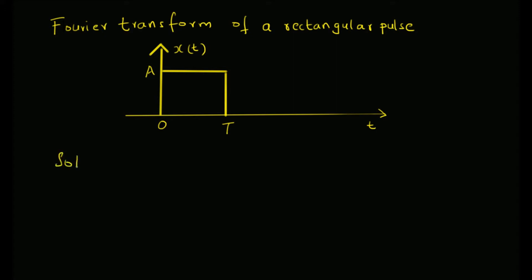Now let us look at the solution. By definition, the Fourier transform X(ω) is given as the integral from minus infinity to plus infinity of x(t) · e^(−jωt) dt. That is the Fourier transform integral.